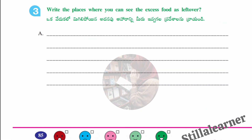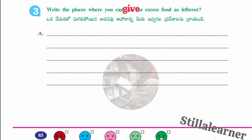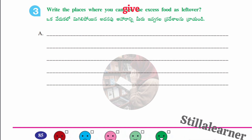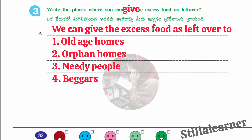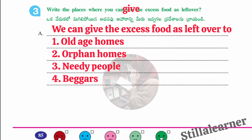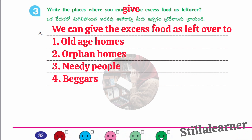Note: there is a slight mistake in the question — in place of 'c' you have to write 'give.' The question is: write the places where you can give the excess food as leftovers. Answer: we can give excess food to old age homes, orphan homes, needy people, and beggars. In this way the food will not be wasted.